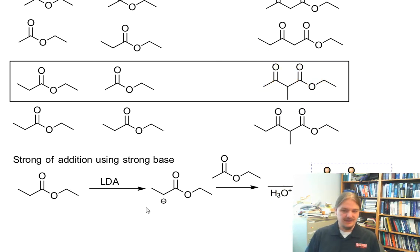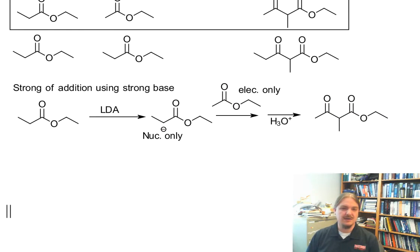And because we have controlled which one is going to be nucleophile only, our ethyl propanoate is nucleophile only, and our ethyl acetate is electrophile only, we get one principal product.